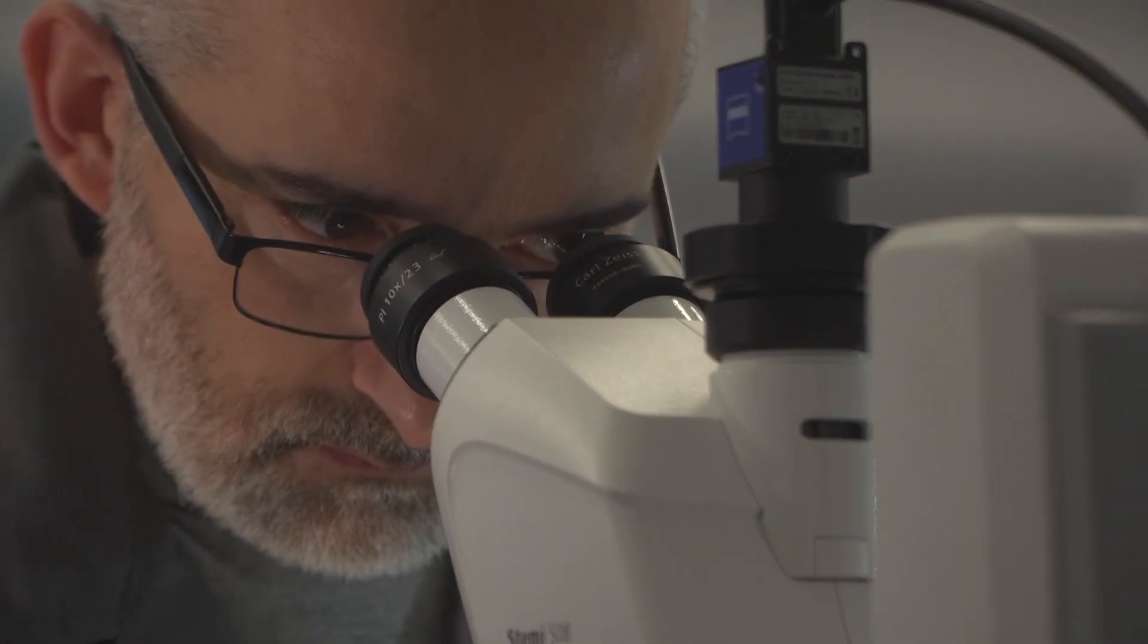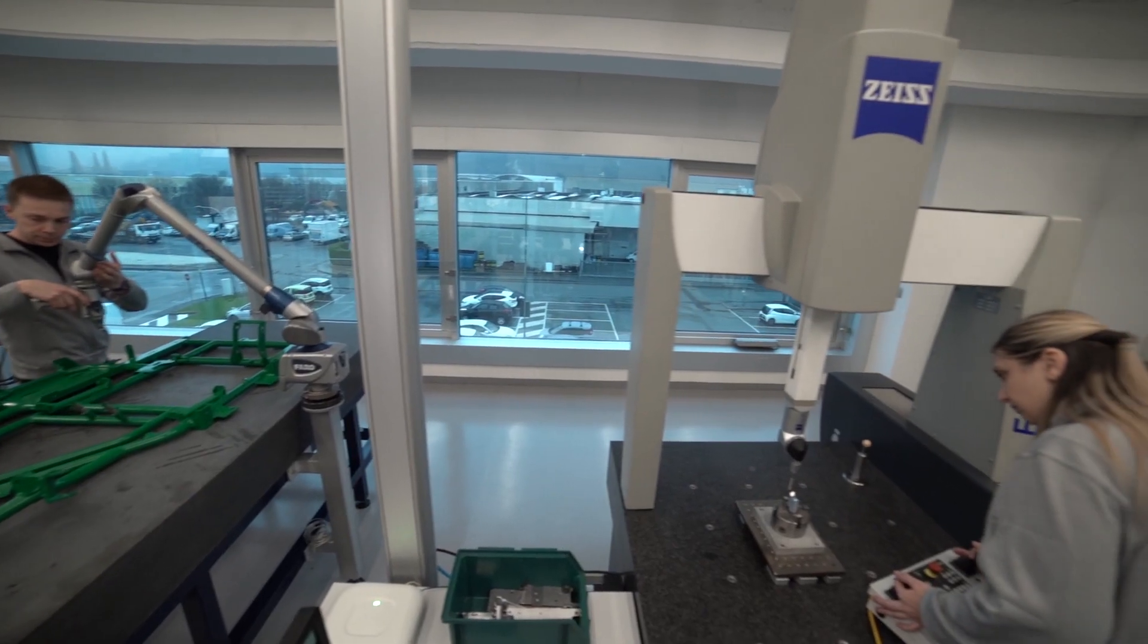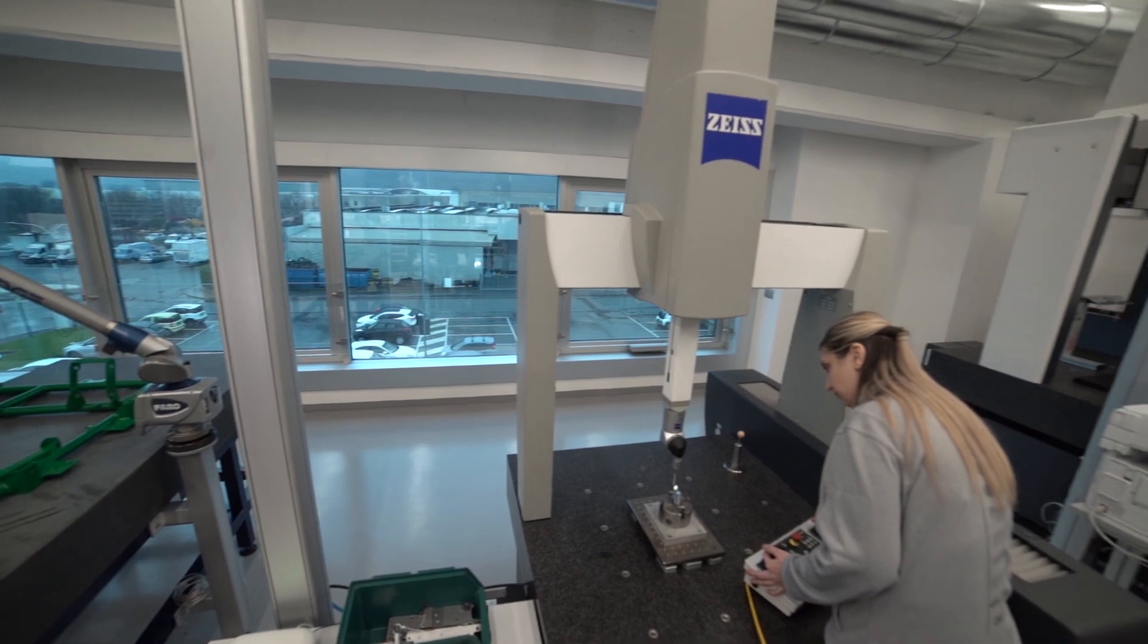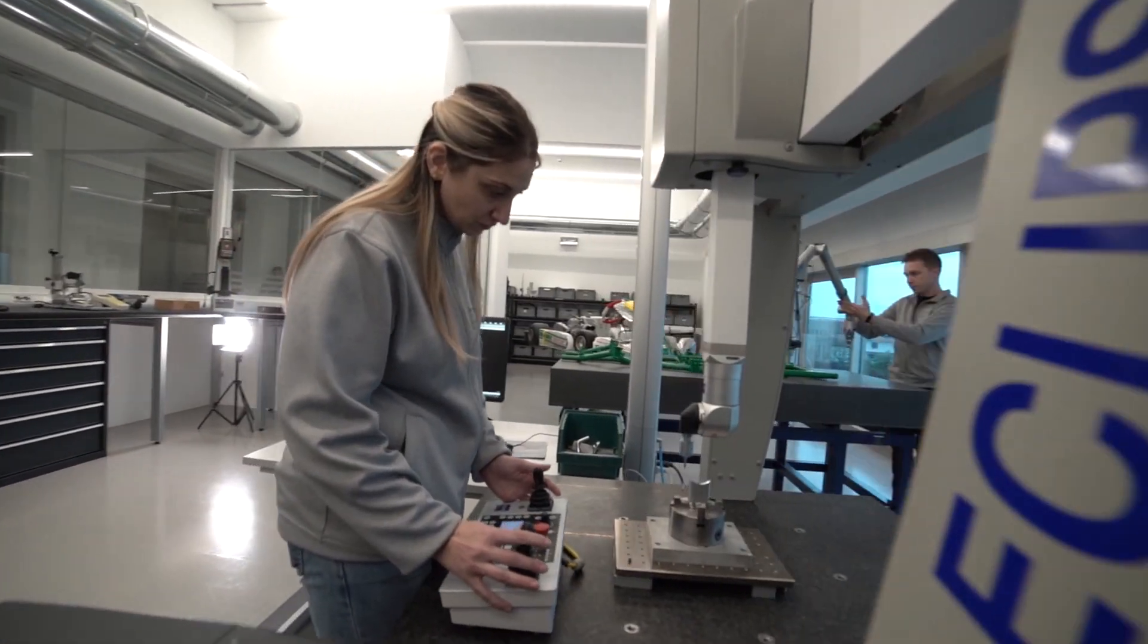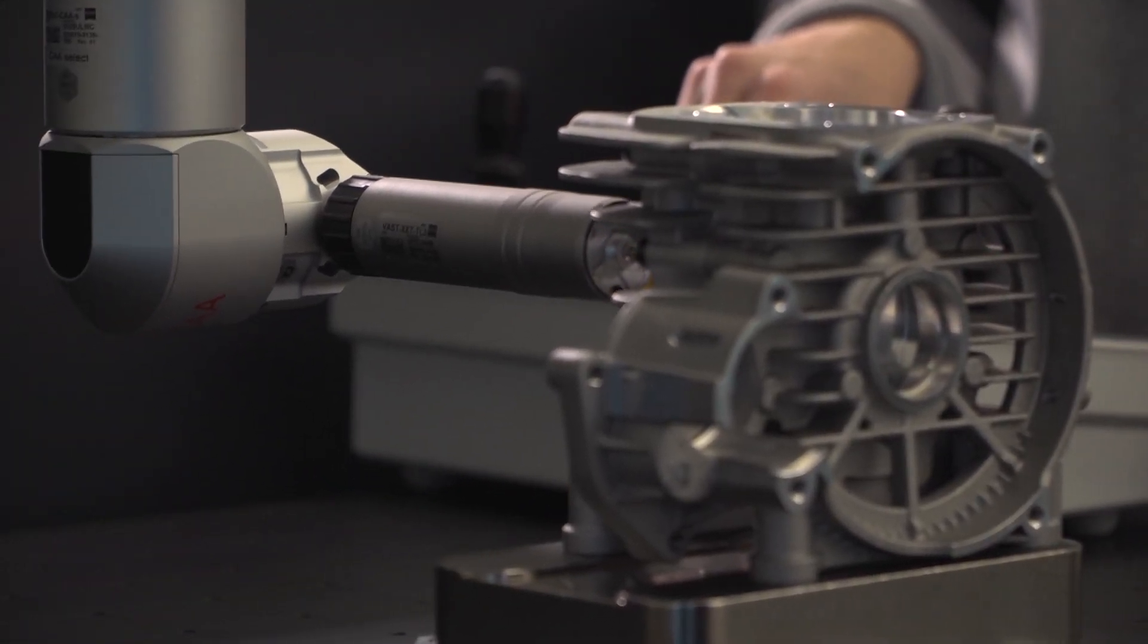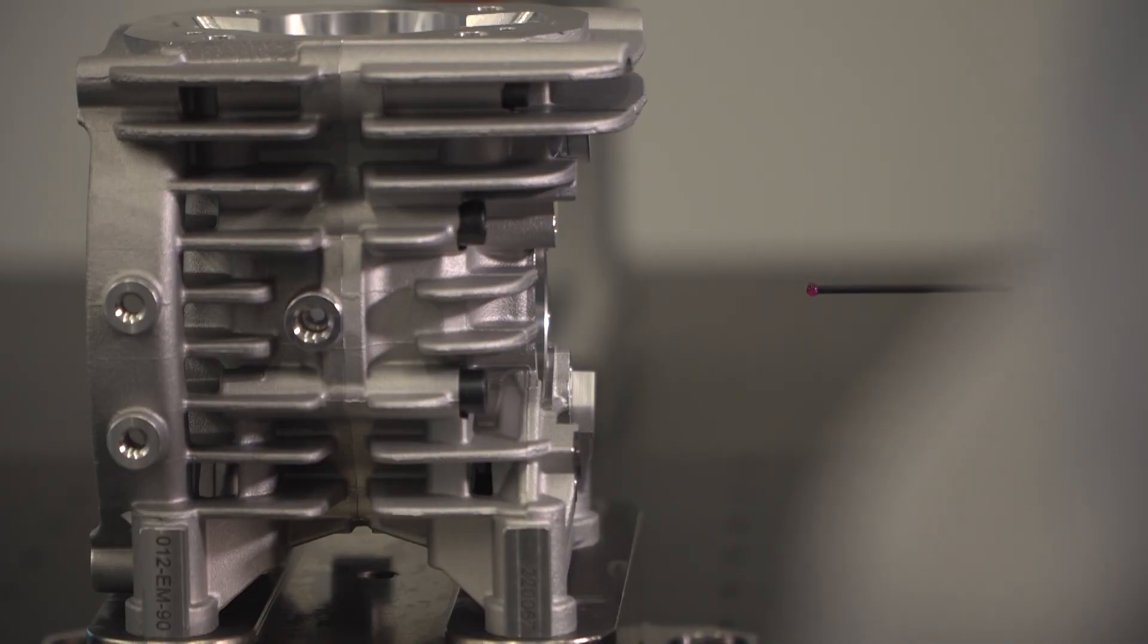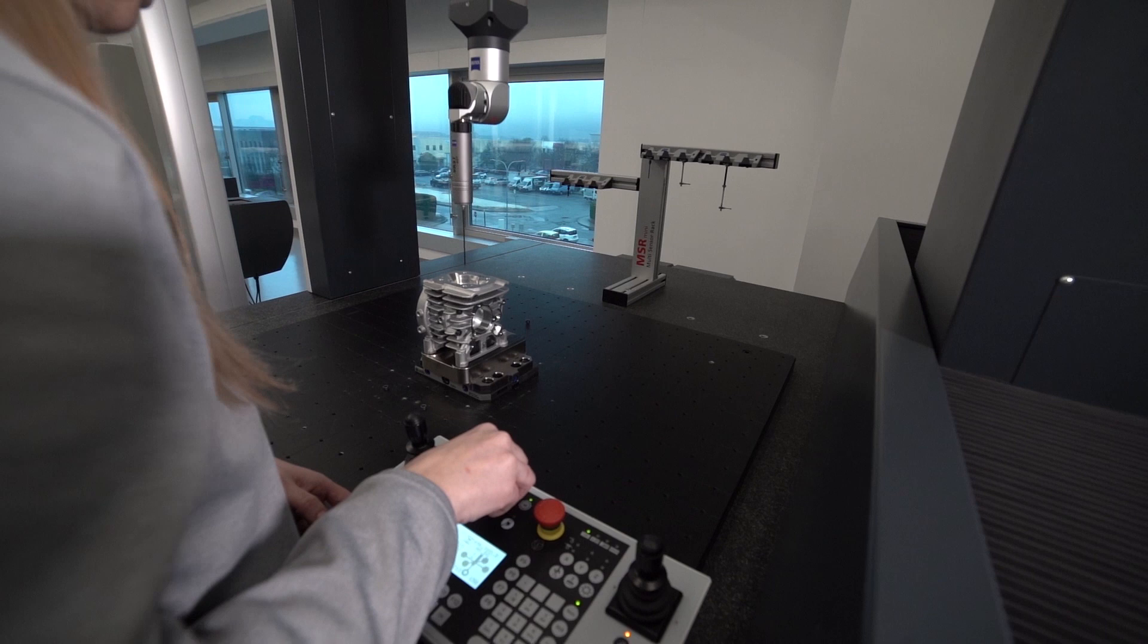Quality control is a continuous and constant process that goes along with all manufacturing steps of the OTK Kart Group's products. Over the years, it has become increasingly decisive in the manufacturing of Rock and Vortex engines, with checks carried out before, during and after the production of the components of the engines themselves.